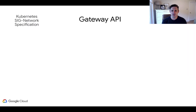The Gateway API is a specification or standard, which means that projects and companies that support it must adhere to it. This promotes portability and reusability because many different implementations have the same user interfaces.